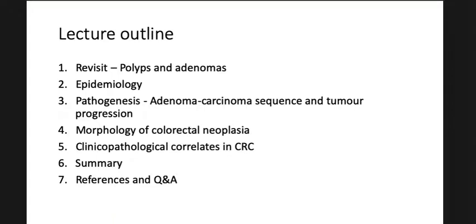This is our today's lecture outline in which we will revisit polyps and adenomas. We'll briefly talk about epidemiology and discuss pathogenesis — how adenomas progress towards cancer by two main pathways. Then we will discuss morphology of colorectal neoplasia, some clinical pathological correlates, and finally summarize this lecture followed by references and Q&A if you have any.